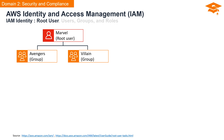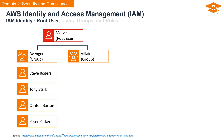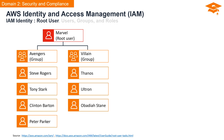Within the Avengers group, you have individual heroes like Captain America, Iron Man, Hawkeye, and Spider-Man. Similarly, in IAM, users represent individual entities, each with their own unique permissions. The villain group includes characters like Thanos, Ultron, and Obadiah Stane. Likewise, different IAM user groups may have permissions to perform certain tasks that align with their respective roles.